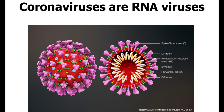Coronaviruses are RNA viruses containing proteins, lipids, and nucleic acids. They disassemble after cell entry and assemble their progeny during replication. These RNA viruses mutate fast — a feature that helps them jump from species and evade natural and medical efforts to eliminate them. Influenza mutates so quickly we need a new vaccine every year. Coronavirus is specifically an enveloped, positive-sense, single-strand RNA virus.